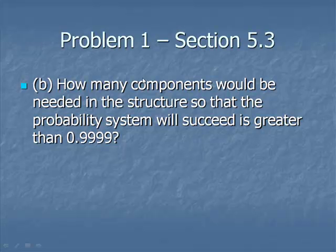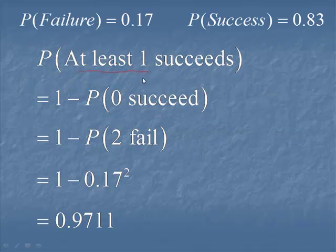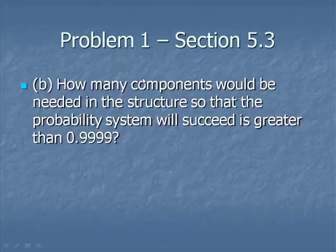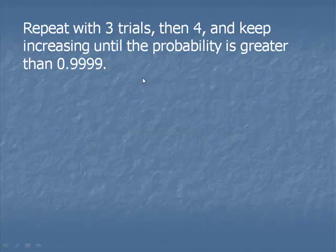In the next problem, we need to determine how many components are needed so that the probability system will succeed with a probability greater than 0.9999. Let's go back to the last screen for a moment. Remember that probability was 0.9711, and that was for two components. So we're going to start repeating this with three trials and then with four, and we'll just keep going until we reach a probability greater than 0.9999.